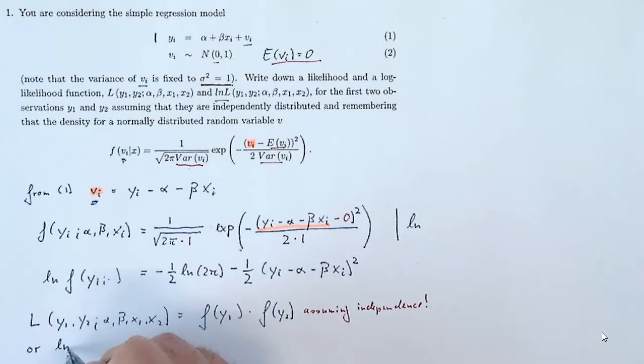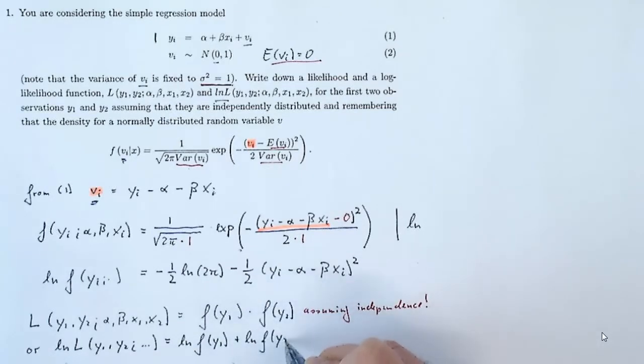We can write the likelihood function for both observations y1 and y2 as the product of the individual densities, assuming independence of the vi's. Since we don't like working with products, we will write down the log likelihood function of y1 and y2.